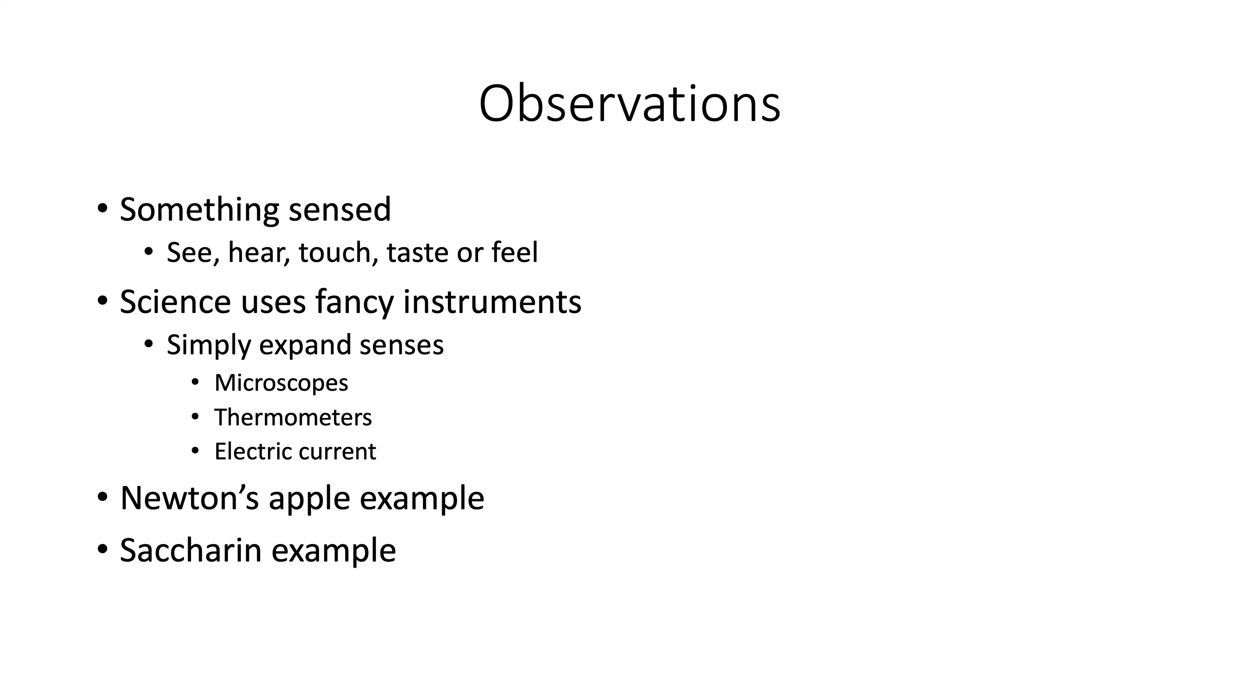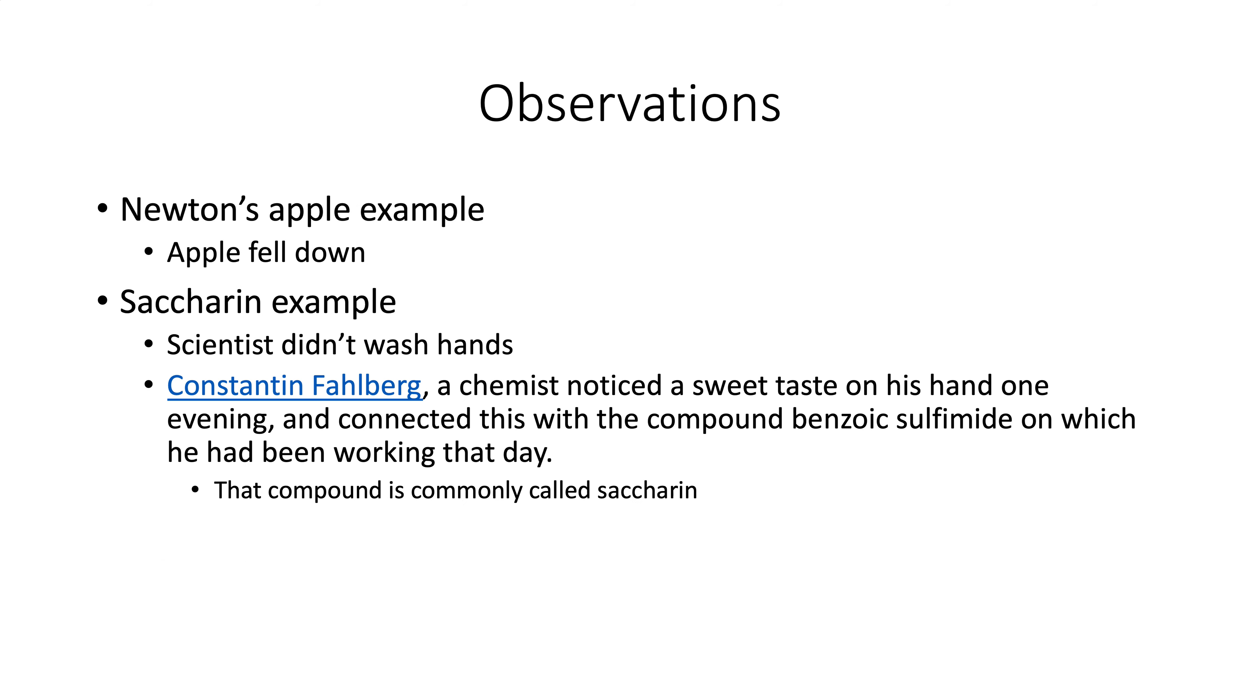Some examples I'm going to thread through here. The story of Newton's apple and the discovery of saccharin are good examples of scientific method. Newton's sitting under an apple tree, apple falls down, bonk hits him on the head. Newton makes an observation, the apple fell down. That's it. That's where the observation stops. Saccharin, interestingly, which is a sweetener, was discovered accidentally by bad practice. The scientist left the lab, didn't wash their hands and had dinner. Scientist's name was Konstantin Fahlberg, noticed a sweet taste on his hand one evening and connected this, figured out that it was saccharin. But the observation was, this tastes sweet.